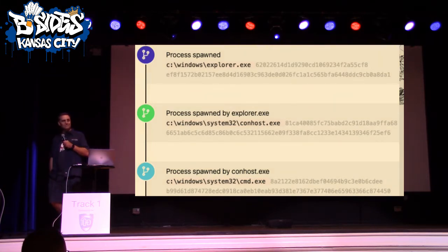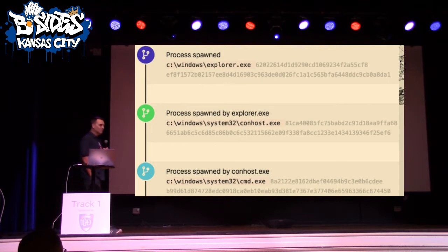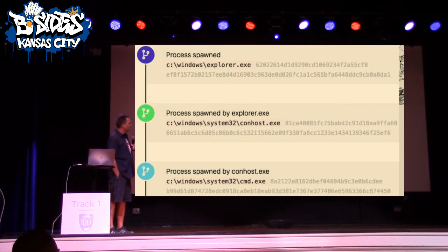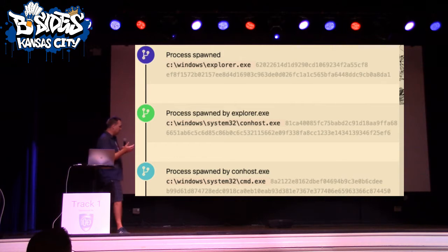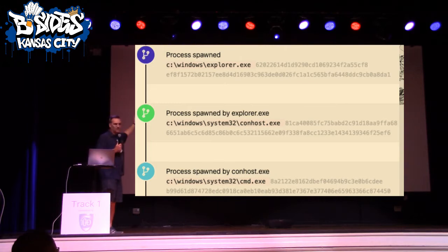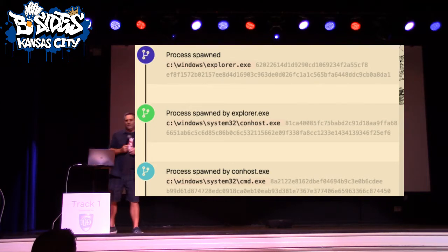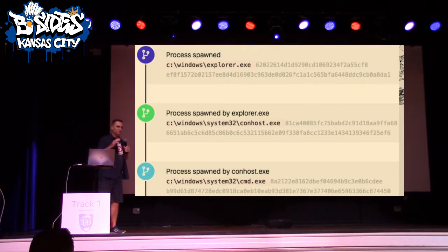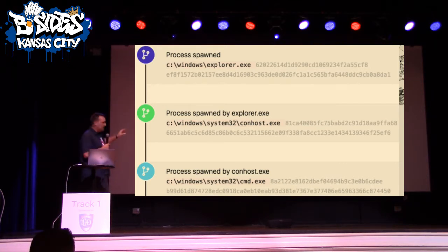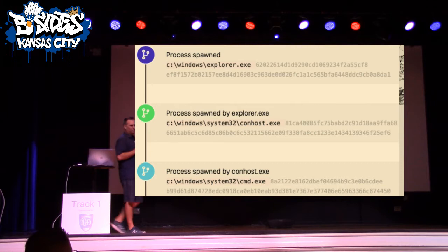If you were somebody looking at this timeline, is there anything here you'd find concerning? The console host application runs when you run a command shell, and these are in chronological order top to bottom. We've got Explorer — is Explorer a console-based application or a GUI-based application? It's a GUI-based application. So to see Explorer spawning the Windows console host is really weird.